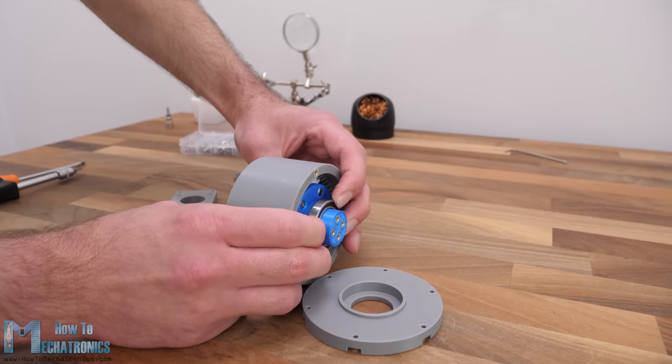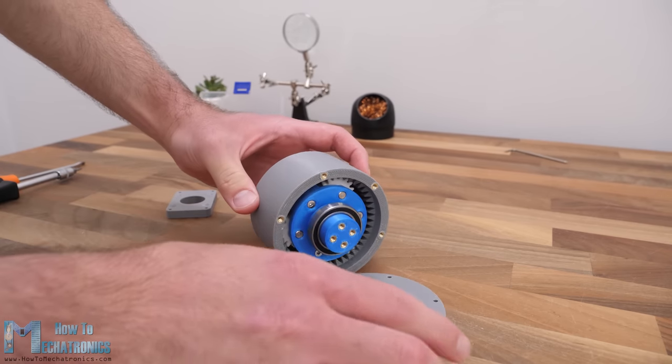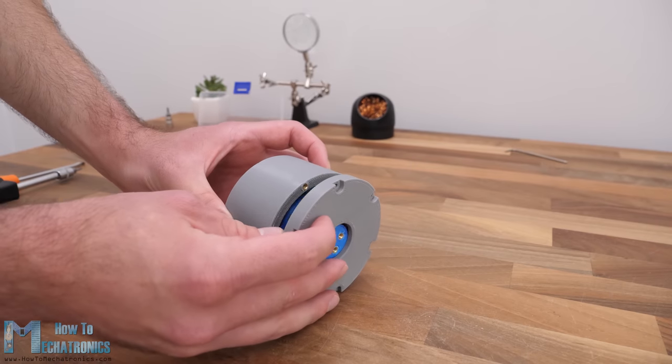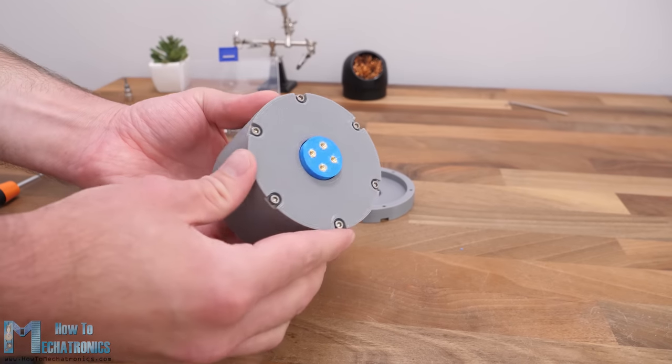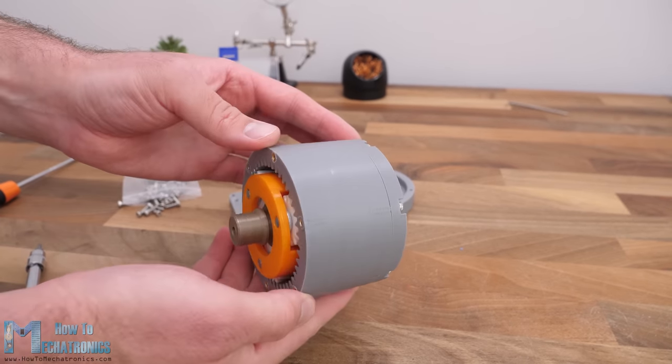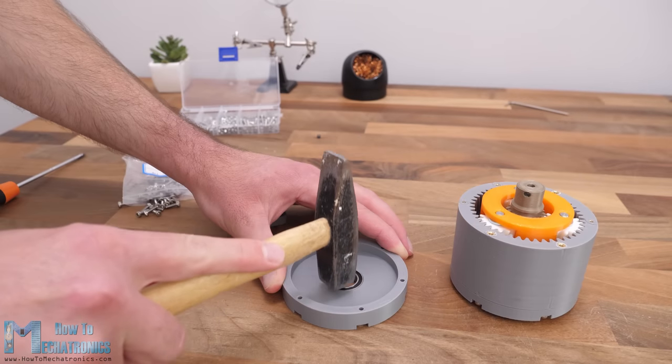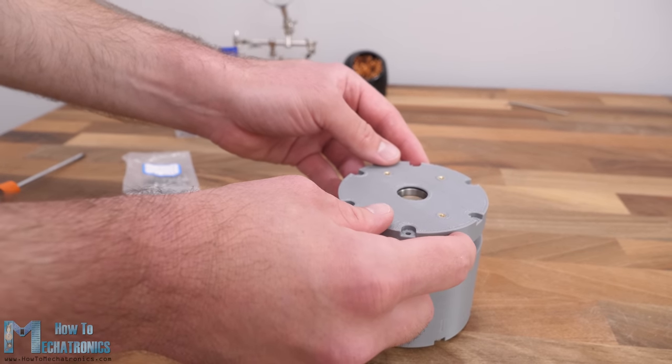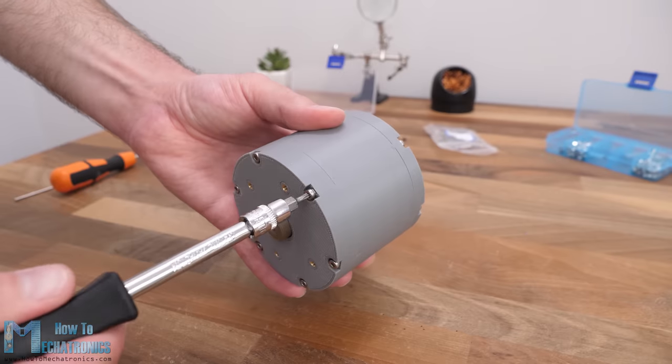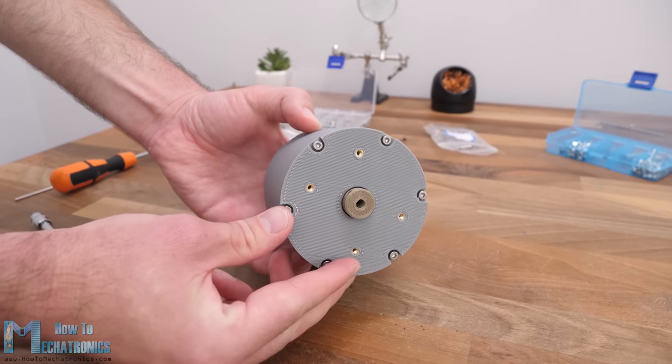Next we can install the bearing on the output shaft and put the front cover in place. We secure the cover with some M3 bolts. With the same method we insert the bearing for the input shaft on the back cover and secure it in place with some M3 bolts again.